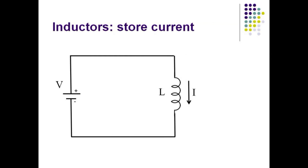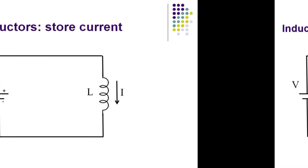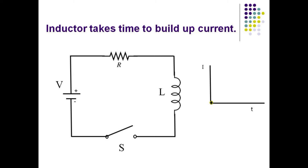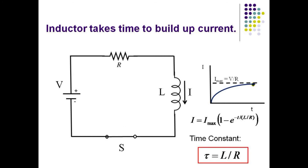An inductor is a device that opposes changes in the current flowing in a circuit. If a circuit initially has no current flowing, the inductor will oppose the buildup of current. If the circuit already has a large current, the inductor will oppose the reduction of that current. In this circuit, the voltage supply is prepared to cause a current to flow as soon as the switch is closed. The presence of the inductor in the circuit opposes the increase in current such that the current builds up according to an inverse exponential curve.